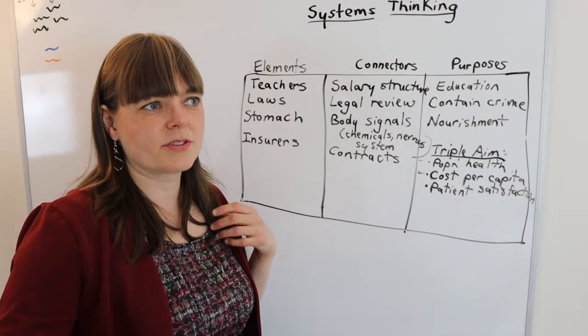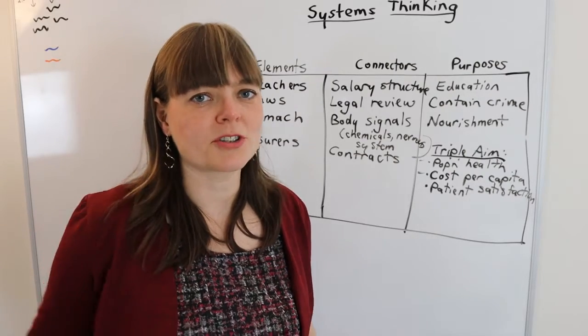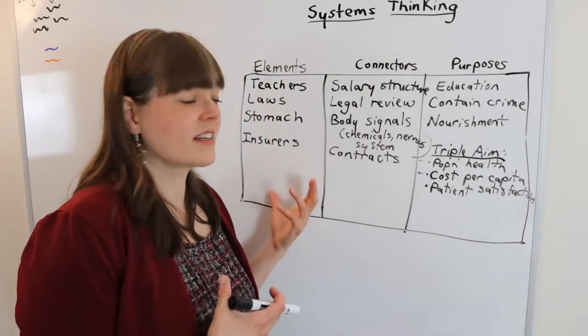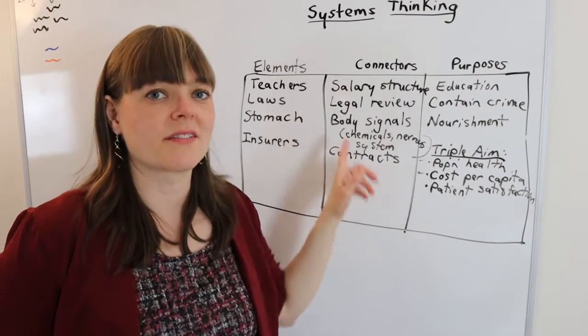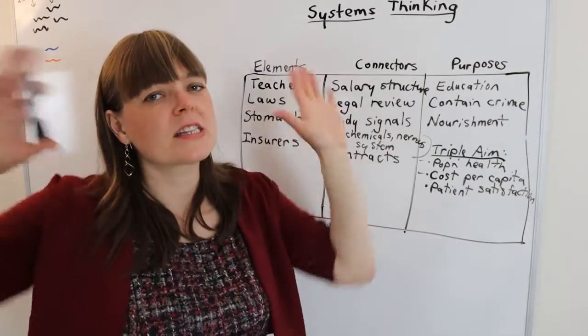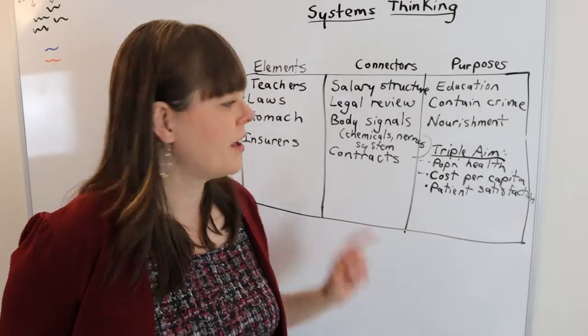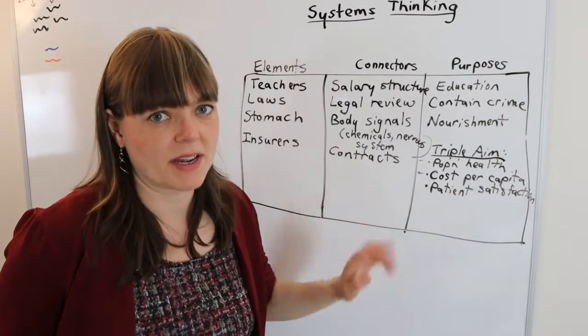She makes the point that if you change out all of the parts, like if you replace every member of a basketball team with a different person, that actually doesn't change the system as much as changing the rules of the game. Changing the rules of the basketball game would completely change the system. Changing the players changes it a little bit, but not as much.